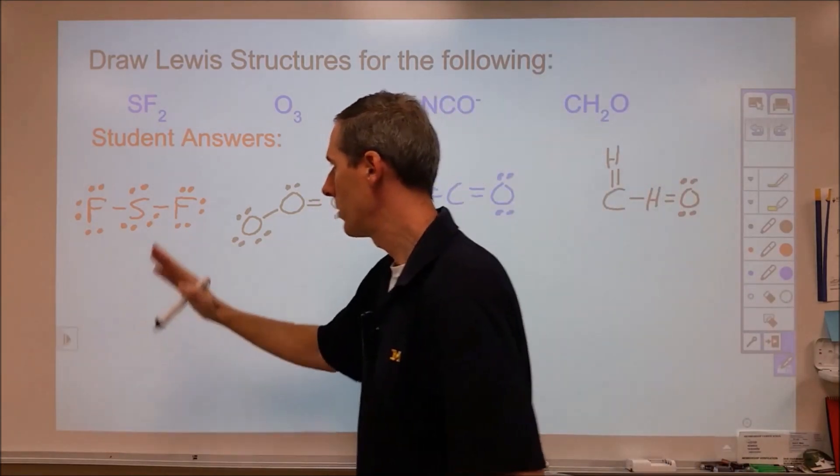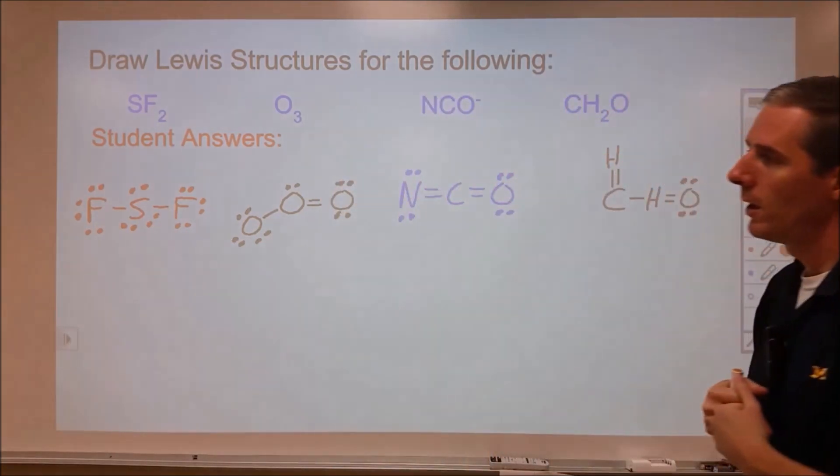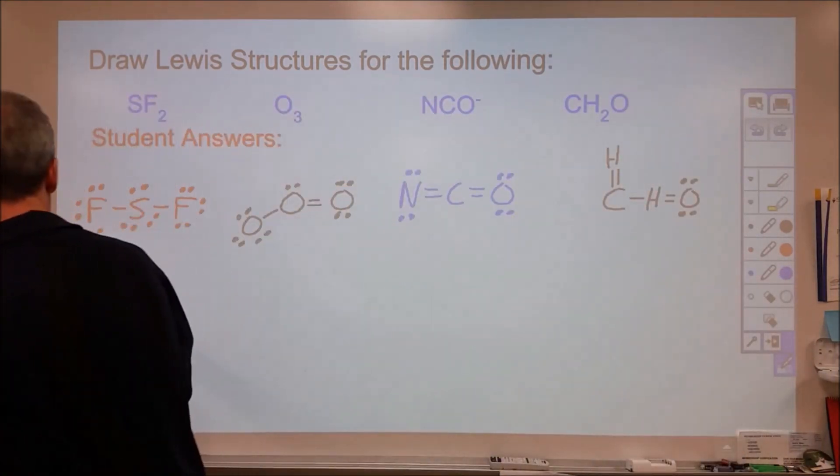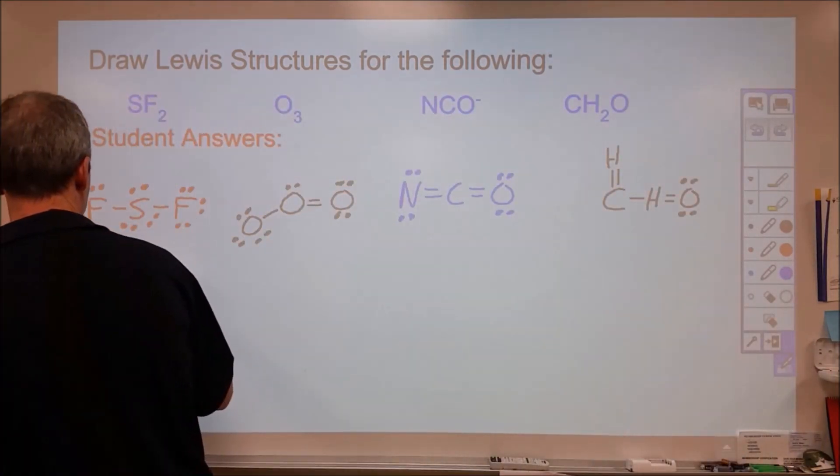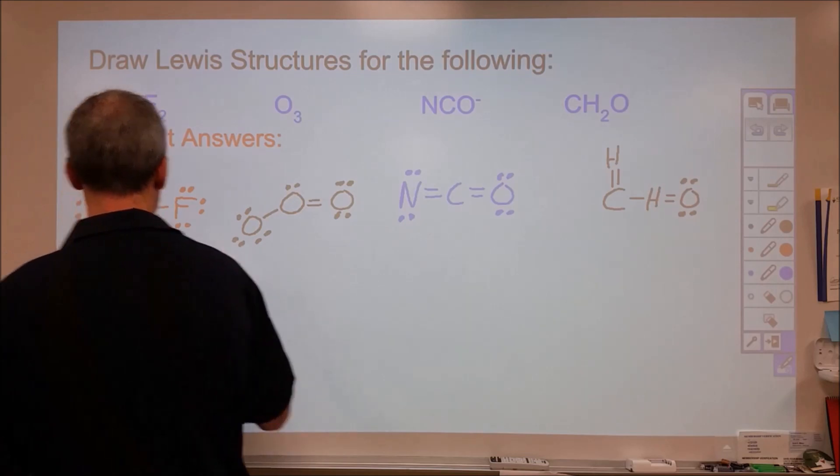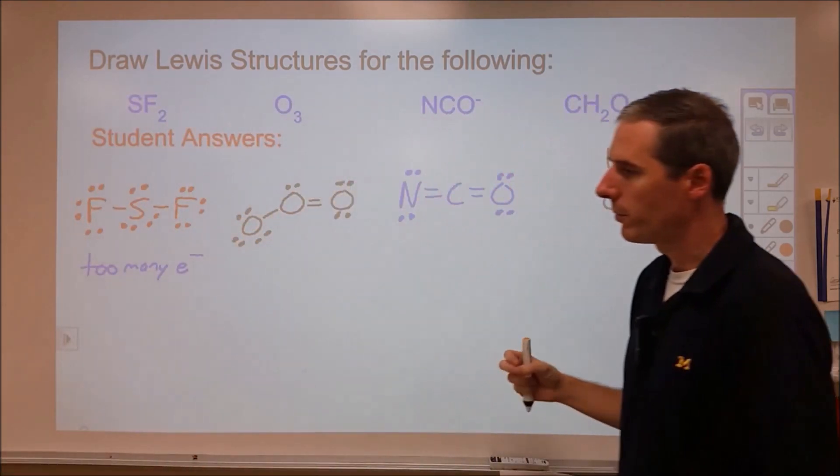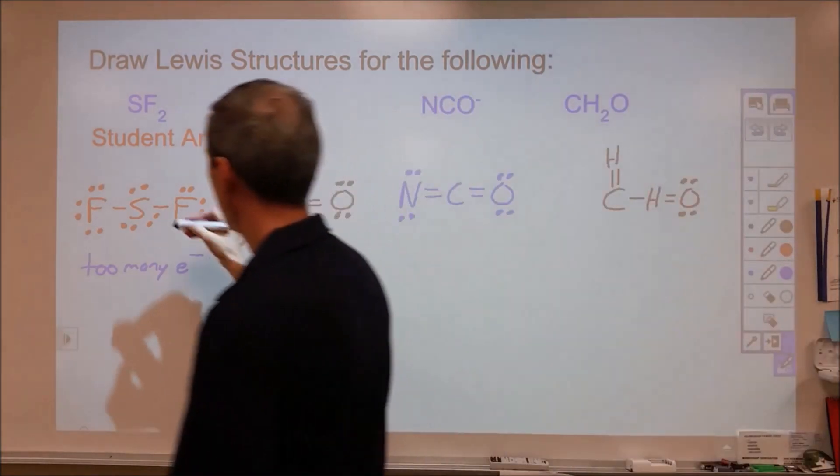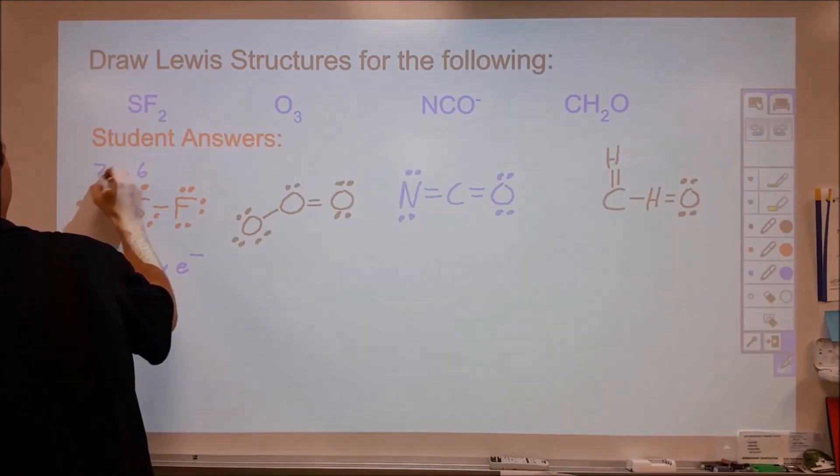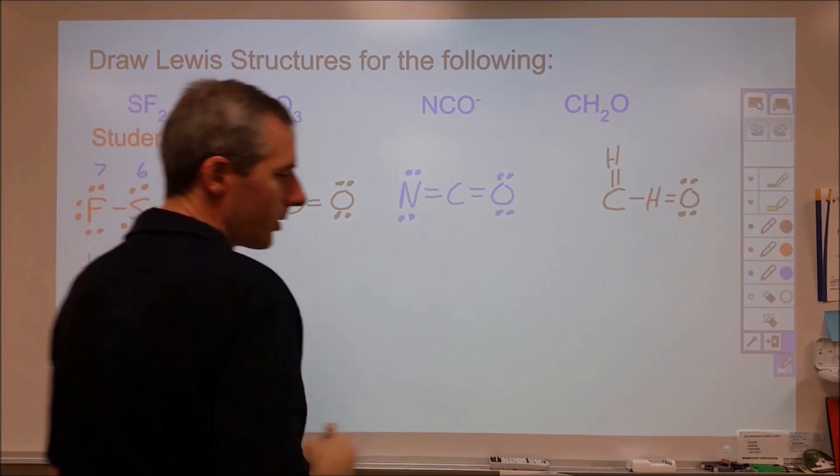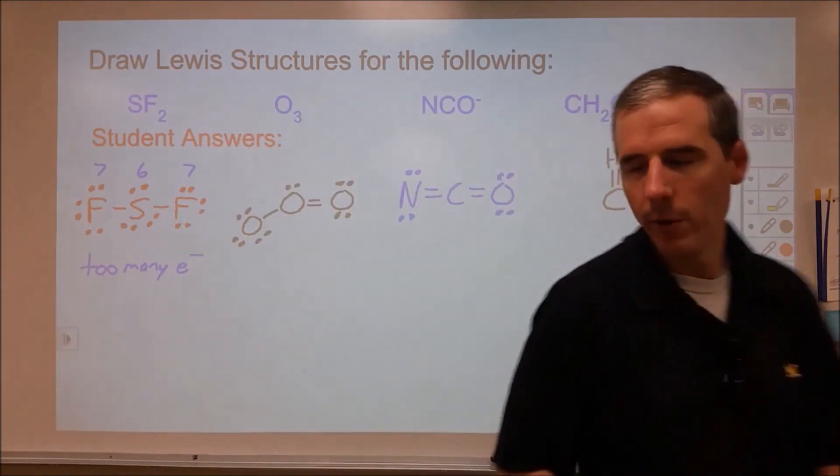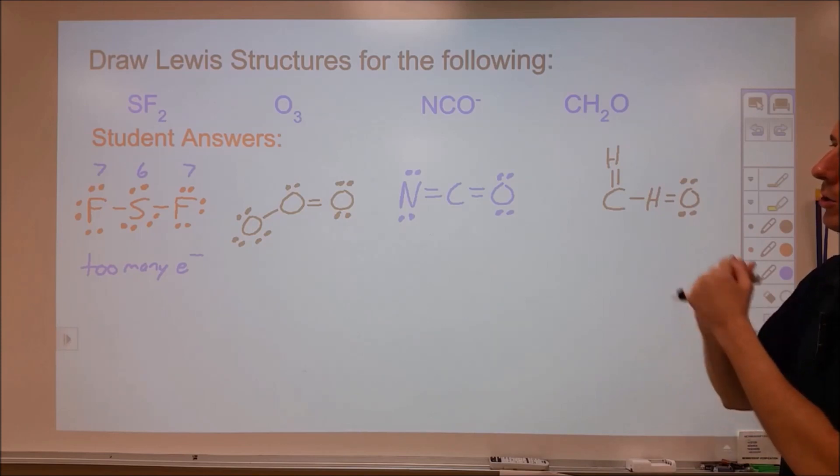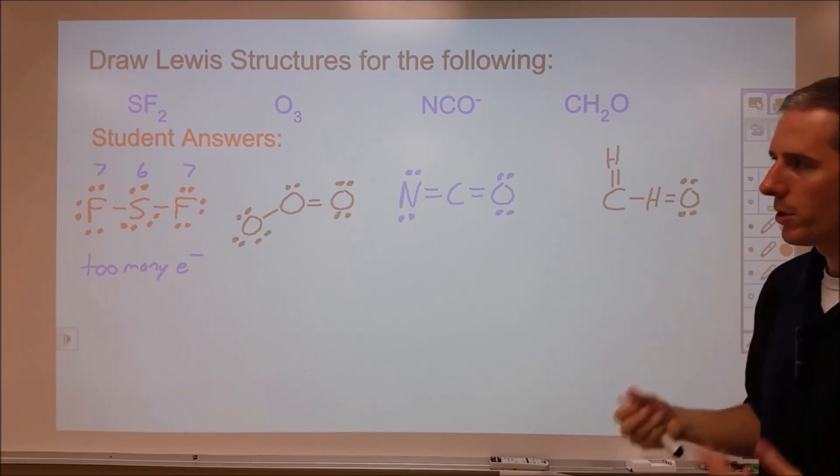The first one here we have SF2, this is the Lewis structure drawn, and what's wrong with this one is that it has too many electrons. And specifically, we're talking about valence electrons here. Sulfur has six valence electrons, chlorine has seven, and chlorine has seven. So total, we have 20 electrons, and we only draw the valence electrons in Lewis structures. So our total number of electrons drawn in this should only be 20.